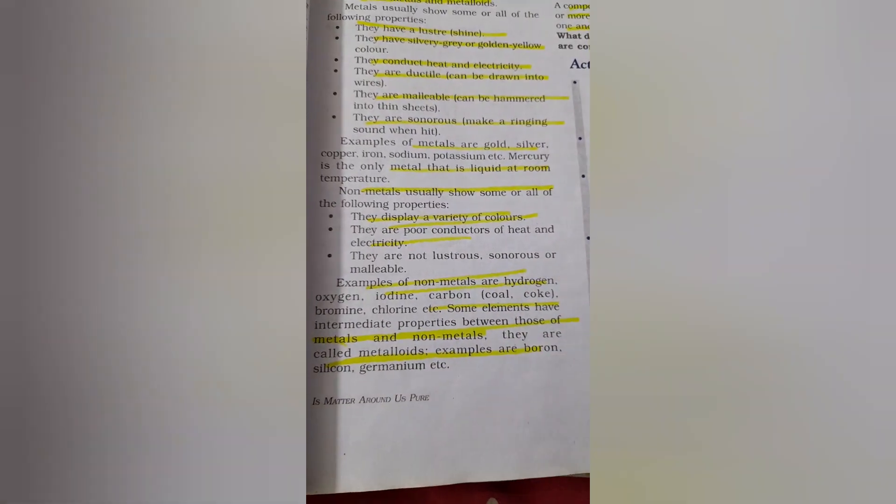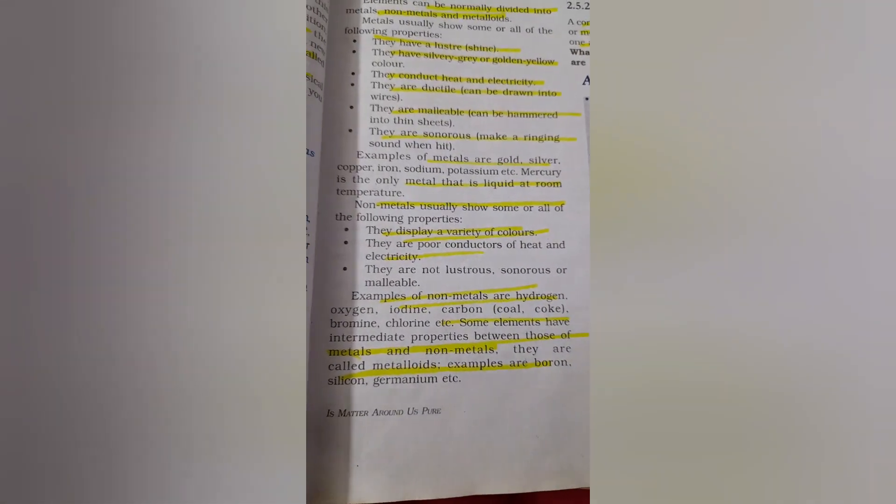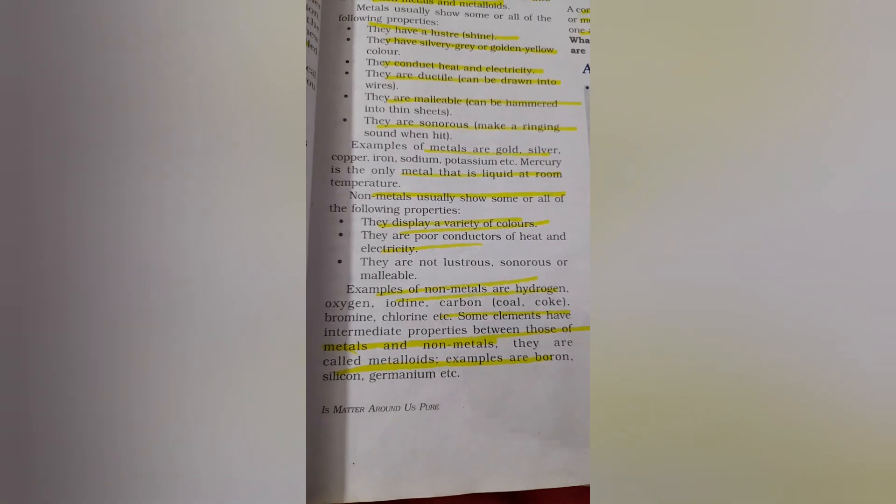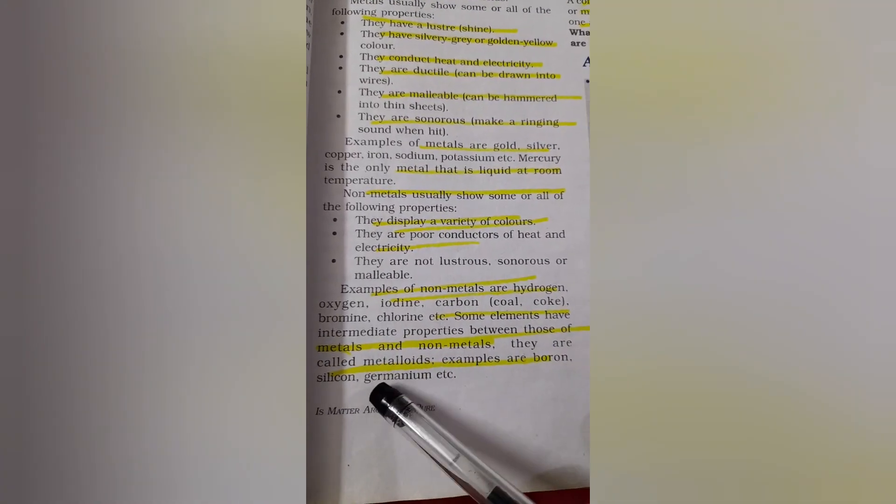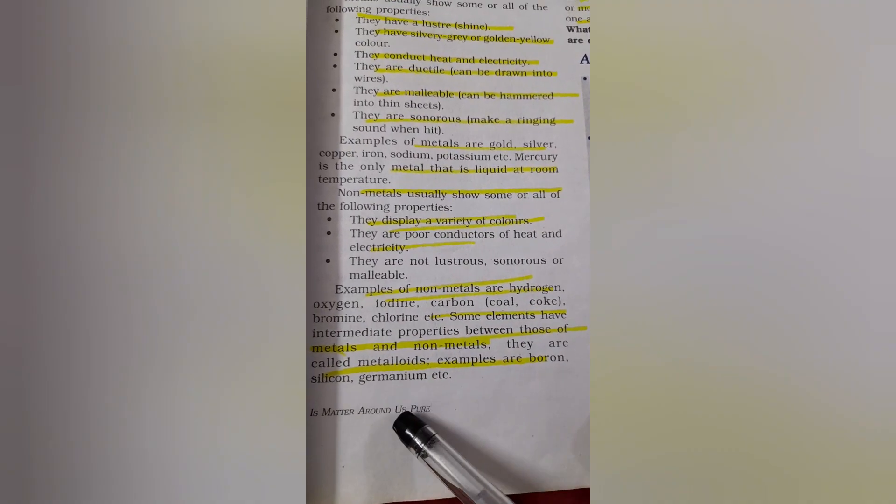Some elements show properties of both metals and non-metals. They are intermediate when showing the properties of metals and non-metals and these are called metalloids. Examples are boron, silicon, germanium and all that.